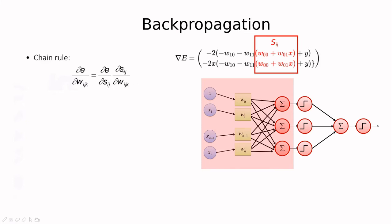And now times the partial derivative of these signals with respect to the weights. If we do this over and over again, we can go back to the number of layers that we want.